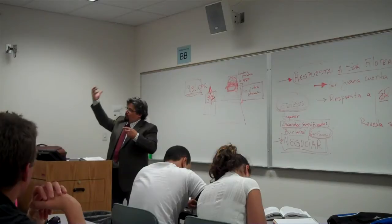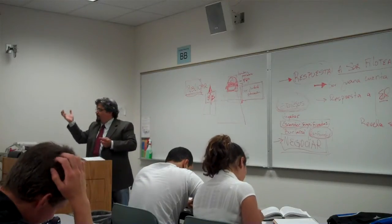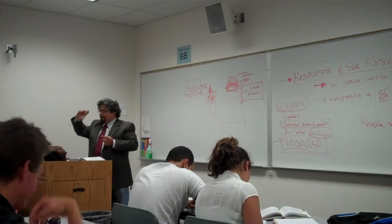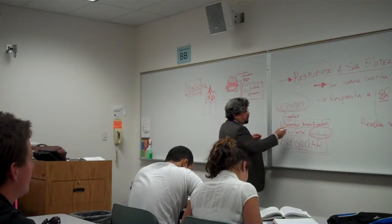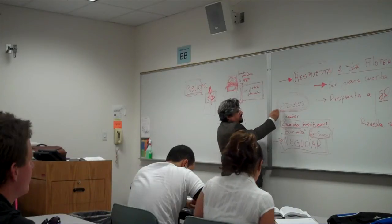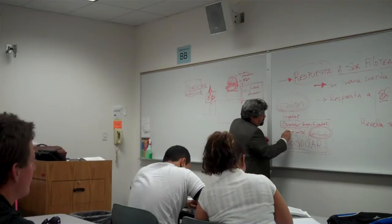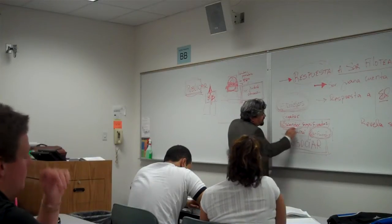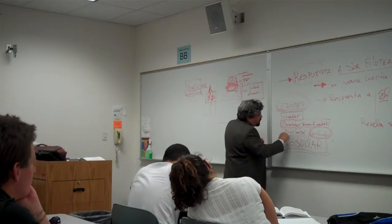Si sabemos que Sor Juana le está, sabe que le está escribiendo al obispo de Puebla, entonces, de nuevo, está todo este uso del código, del código barroco, para confundir, para esconder significados, es engañar, es burlarse.